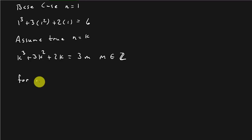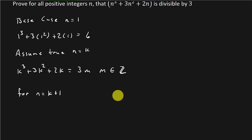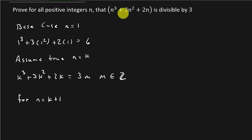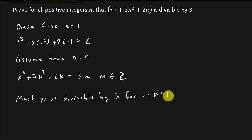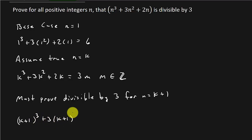Now for n equal k plus 1, we have to prove that it's divisible by 3. So basically what we're doing here is we're going to take k plus 1. We must prove divisible by 3 for n equal k plus 1. So we're going to replace all these n's with k plus 1. So we've got (k+1) cubed plus 3 times (k+1) squared plus 2 times (k+1).